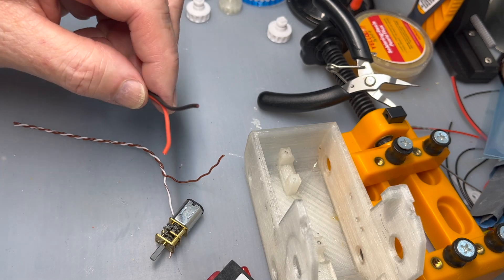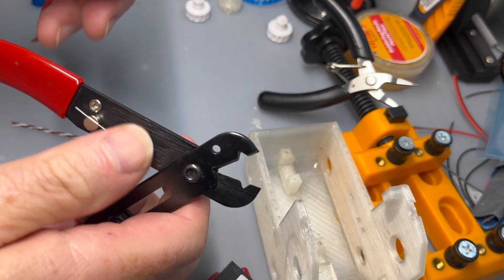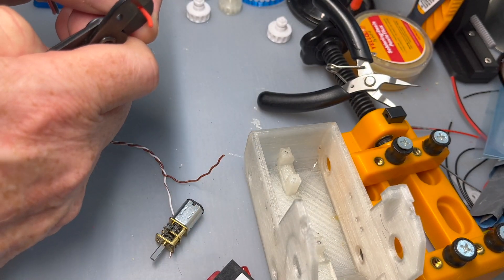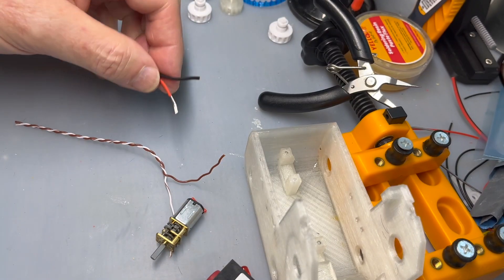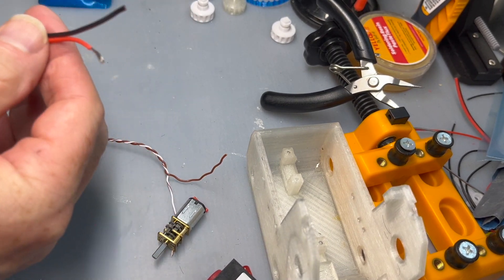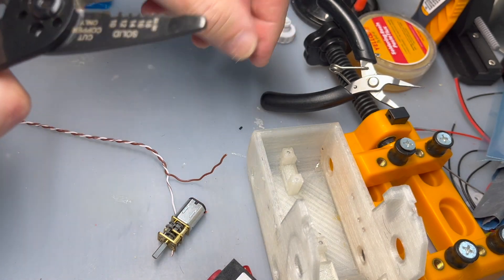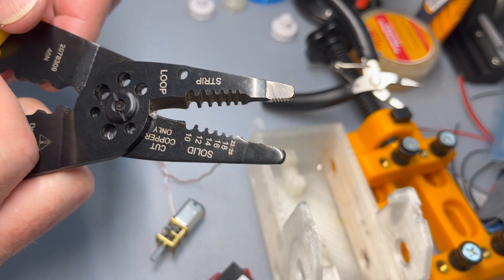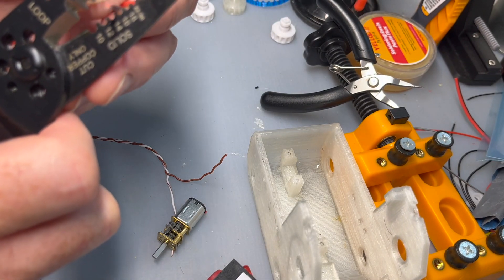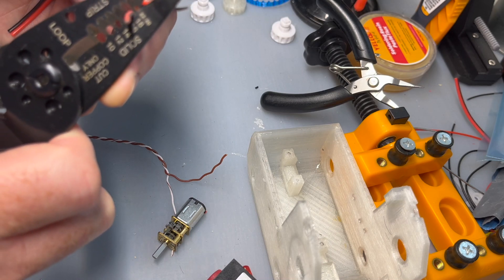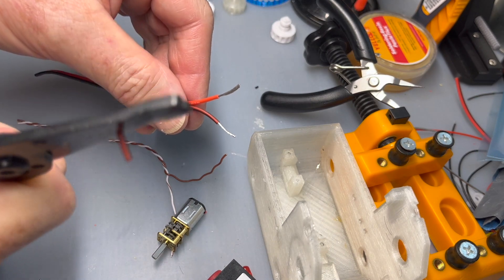I use 20 or 22-gauge silicon-coated wire, and it's very easy to strip. You can strip with these types of tools, but you've got to be very careful not to nick it. So you want to go through the insulation just a bit and pull off.